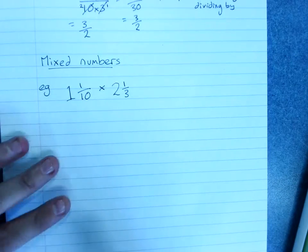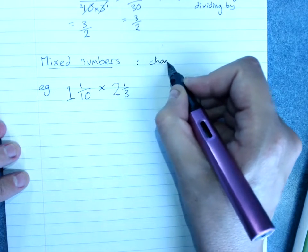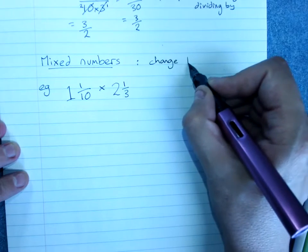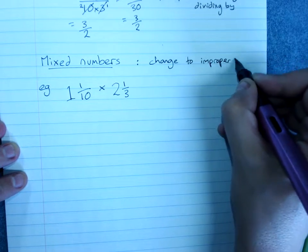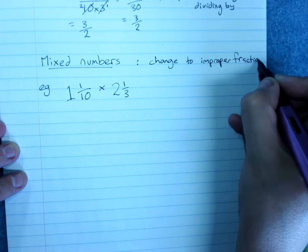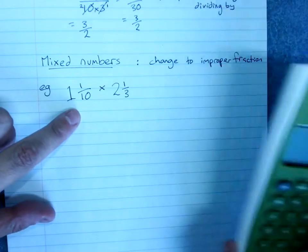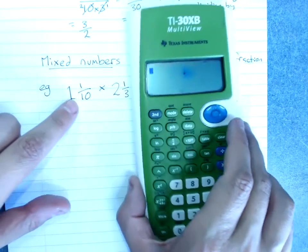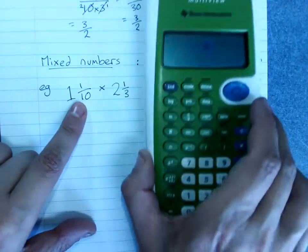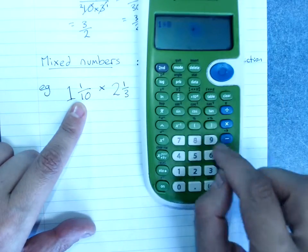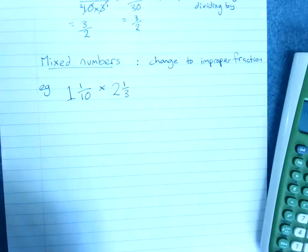When dealing with mixed numbers, your best bet is to change to an improper fraction first. If you're really not sure how to change this to an improper fraction, this is 1 and 1 tenth, or 1 plus 1 tenth. You could do 1 plus 1 over 10, and get 11 over 10.